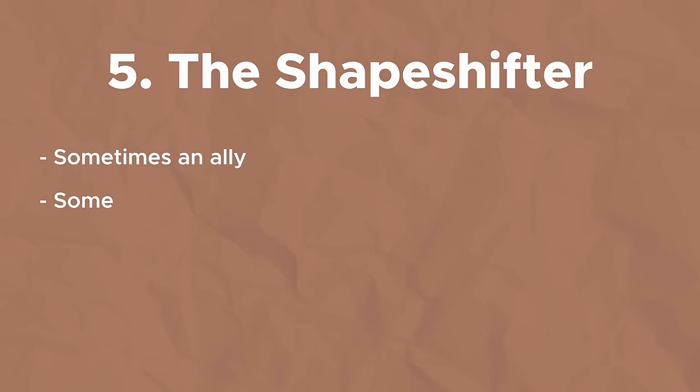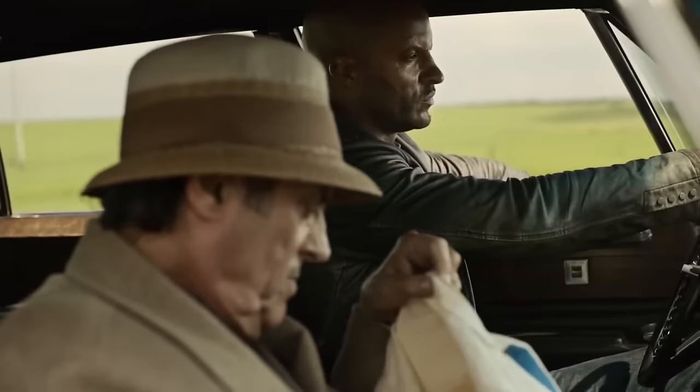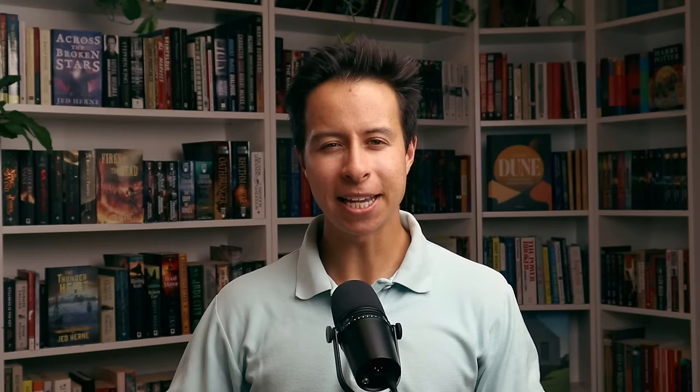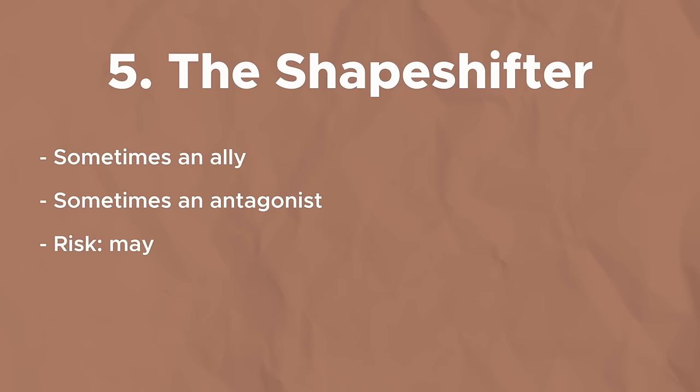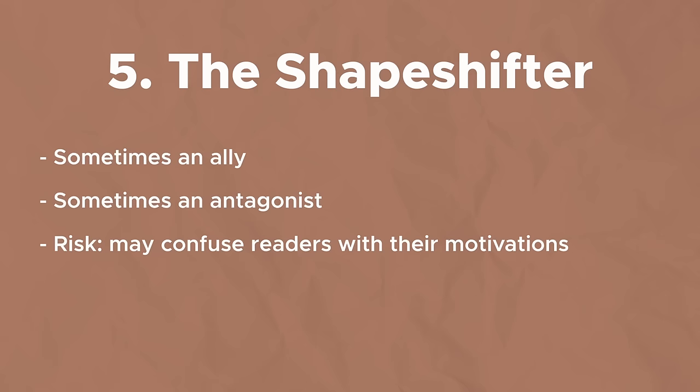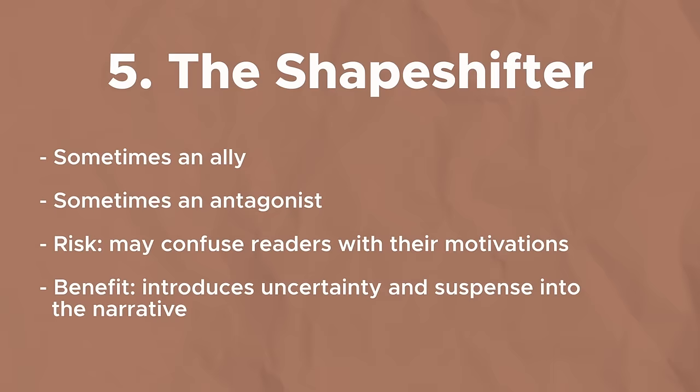Our fifth and final antagonist archetype is the shapeshifter — someone who is occasionally an ally to the protagonist but sometimes works against their goals, with their true nature in a constant state of flux. You might also develop their arc so they bend toward or away from the main character over time. Examples include Severus Snape, Jaime Lannister, Taravangian from the Stormlight Archive, Mr. Wednesday from American Gods, and Lord Vetinari from Terry Pratchett's Discworld. The risk is they can confuse readers if their motivations aren't made clear or their actions lack consistency — you must avoid using them as a mere plot device. The benefit is they introduce tremendous uncertainty and suspense, making for wonderfully complex antagonists that keep readers guessing.